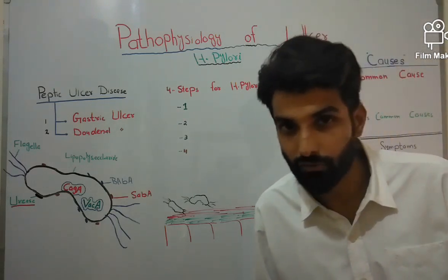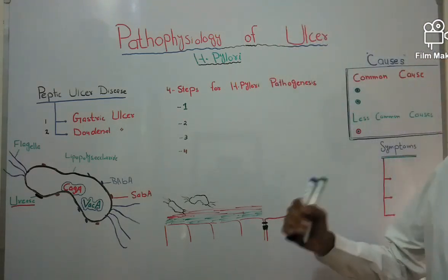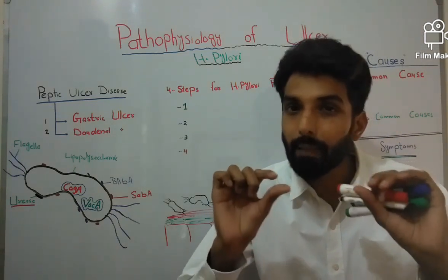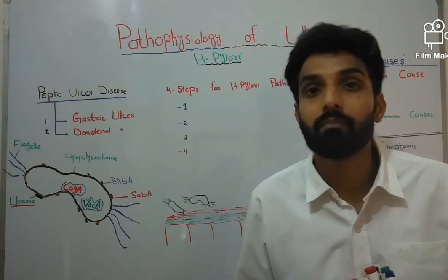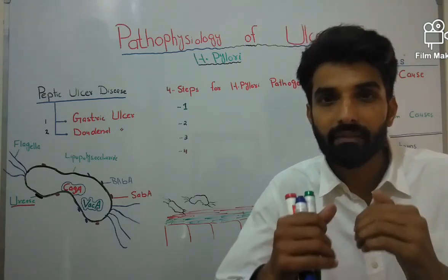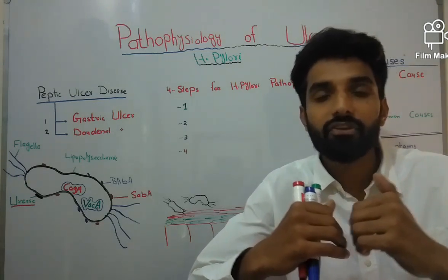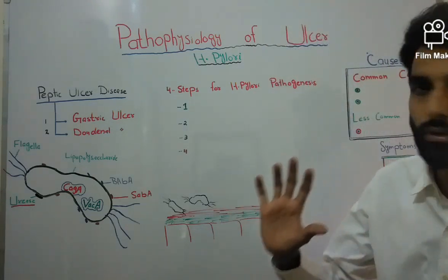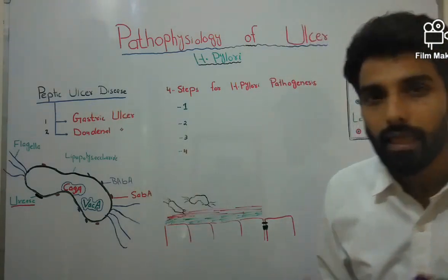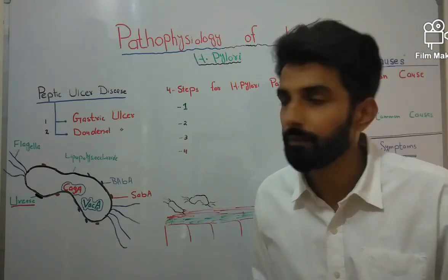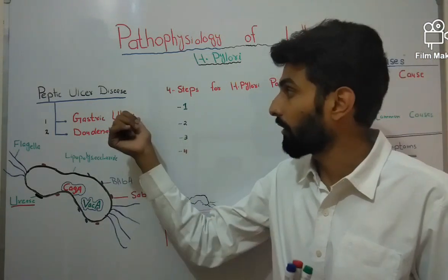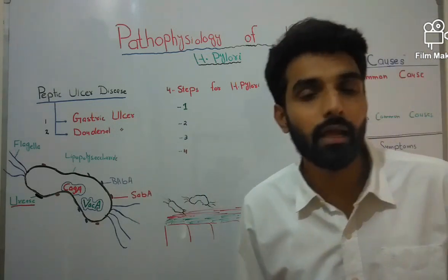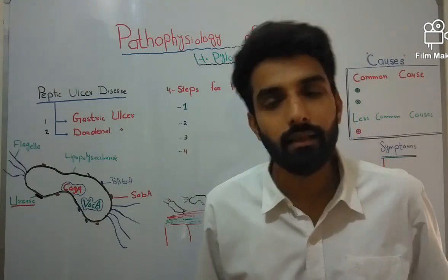In today's video we will be talking about the pathophysiology of peptic ulcer disease. Peptic ulcer disease is a break in the epithelial cells of the GI tract. It is mainly of two types: gastric ulcer, when that break is present in the stomach, and duodenal ulcer, when that break is present in the duodenum.